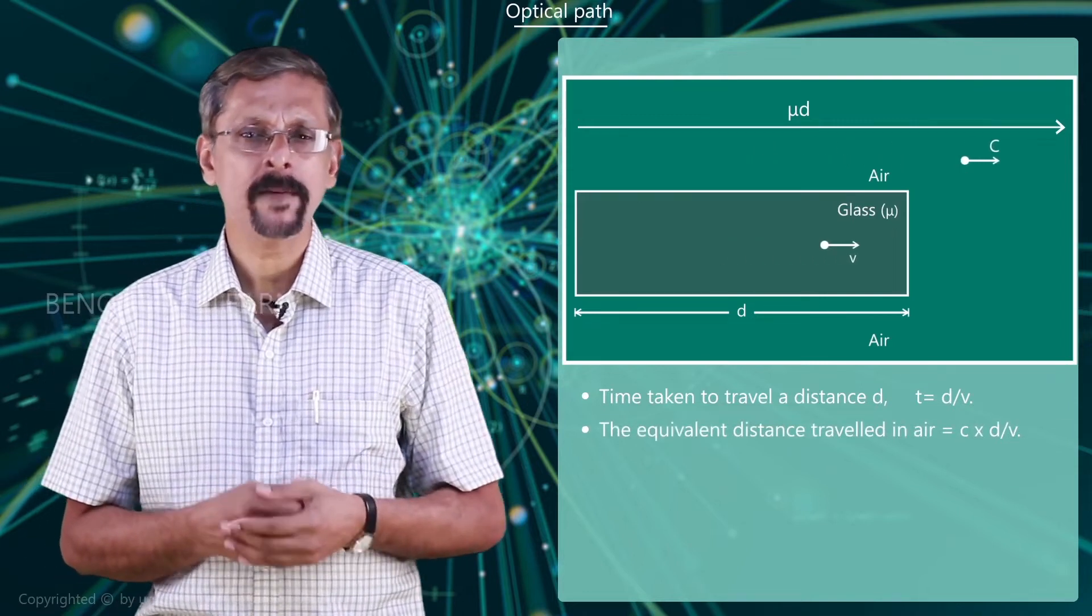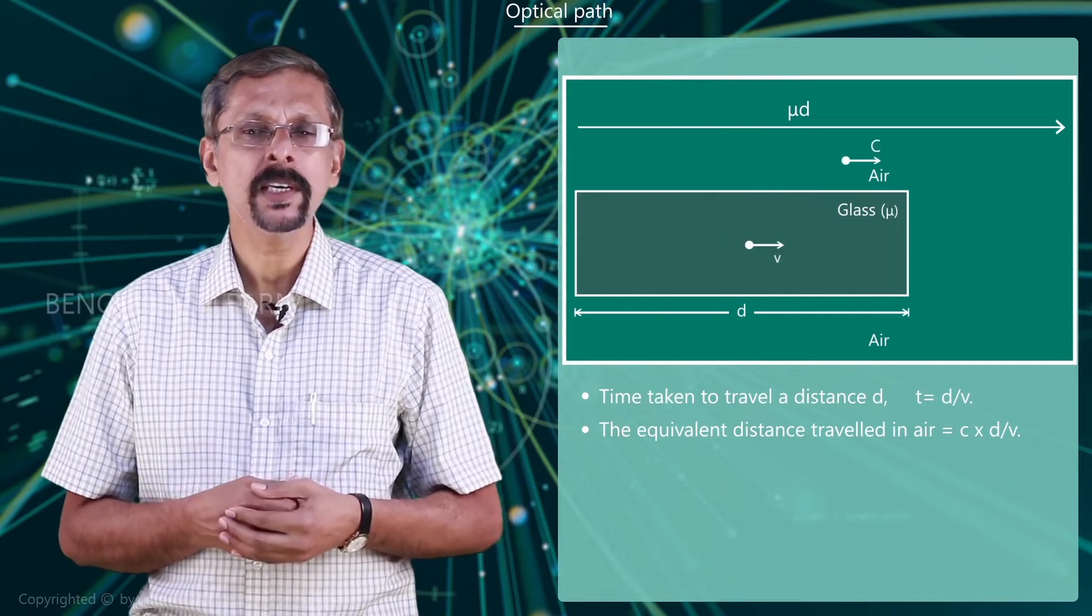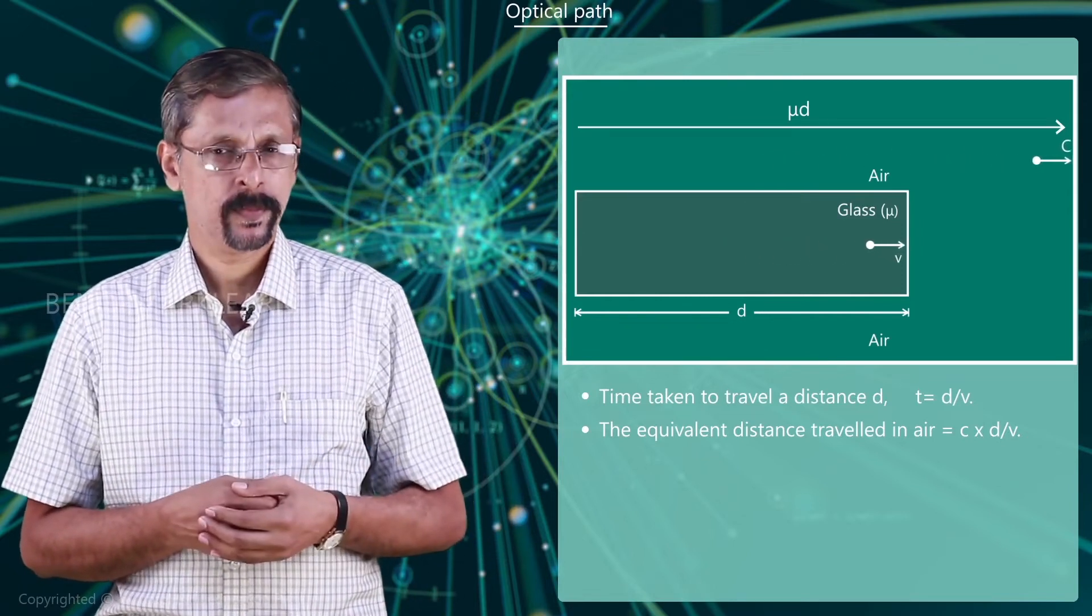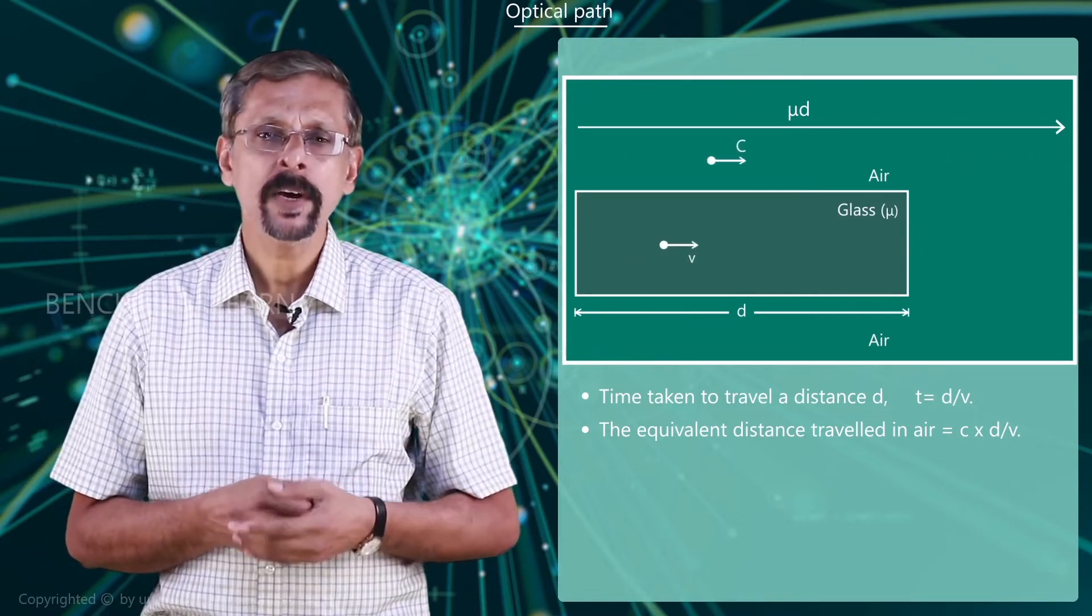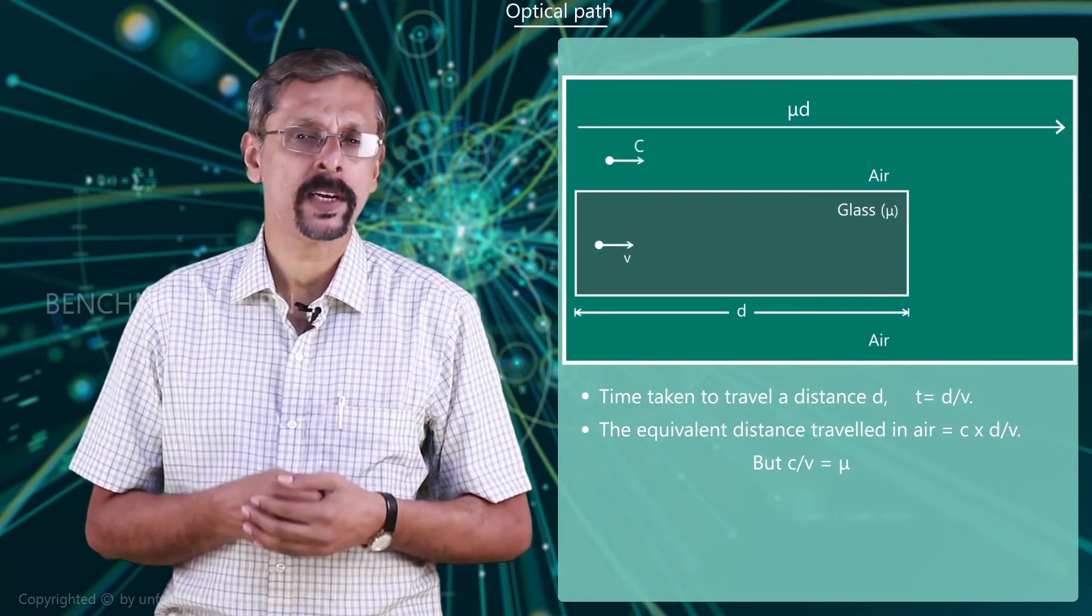The equivalent distance travelled in air equals c times d by v, where c is the velocity of light in air. But we know that c by v is the refractive index of the material mu.